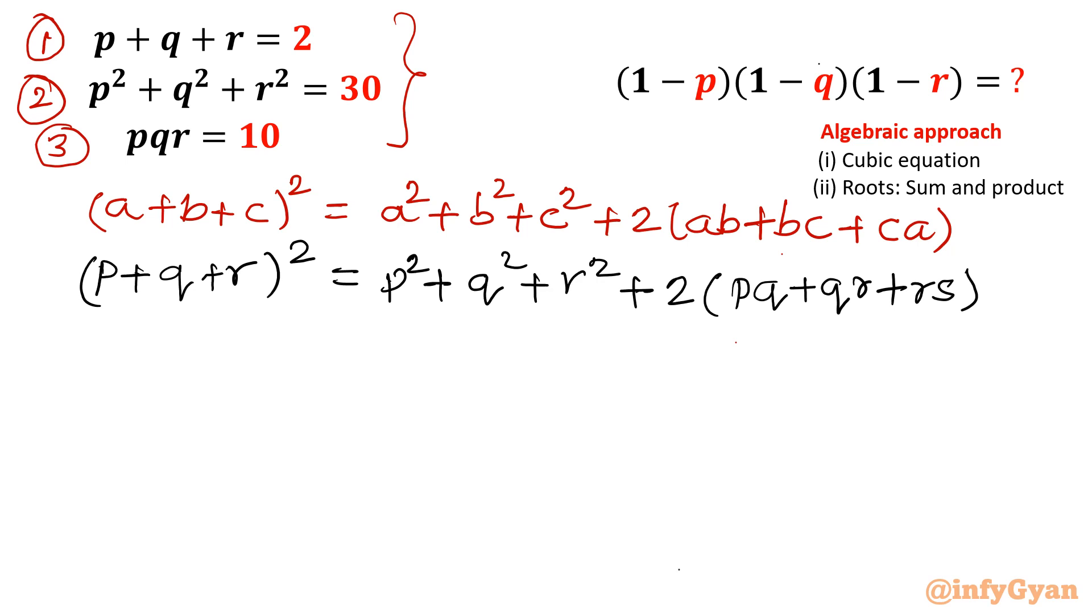Now let us put the values from equation 1, I will write p plus q plus r as 2. From equation 2, in place of p square plus q square plus r square, I will write 30 plus 2(pq plus qr plus rs), that is what we are looking for. So this value is 4, 2 square is 4, take away 30 from both sides.